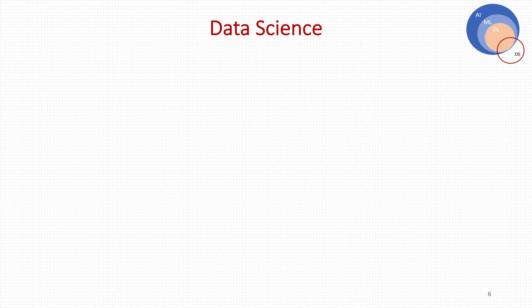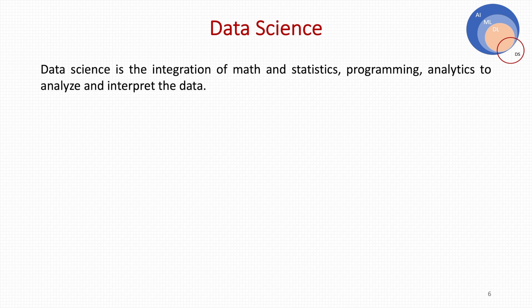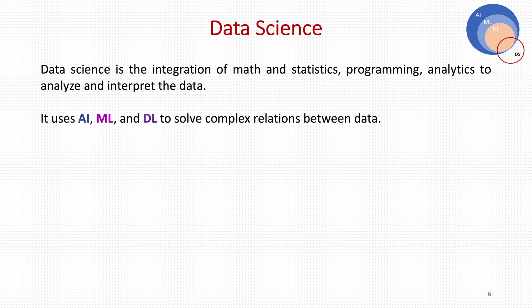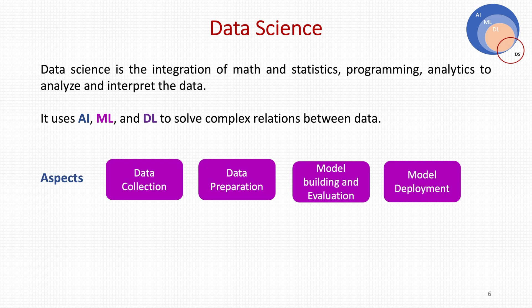Now, what is data science? Data science is simply an interdisciplinary field that integrates math, statistics, and programming. It also uses AI, ML, and deep learning to uncover the relations between the data. Key aspects of data science include data collection, data preparation, model building and evaluation, and model deployment. So this is the difference between AI, ML, DL, and DS — I hope it is fairly clear to you all. Thank you.